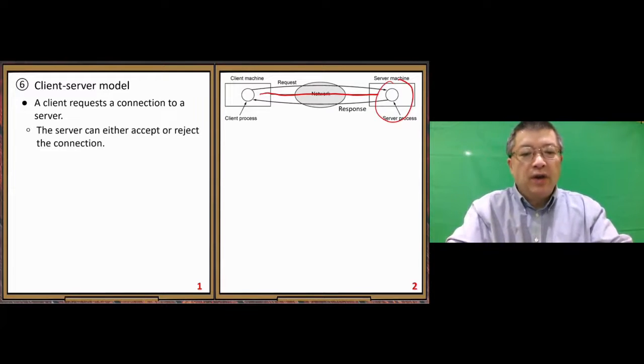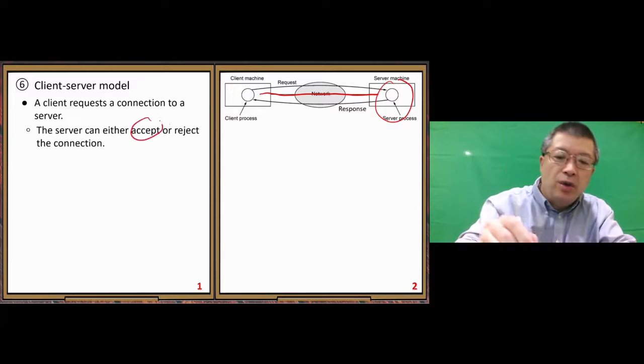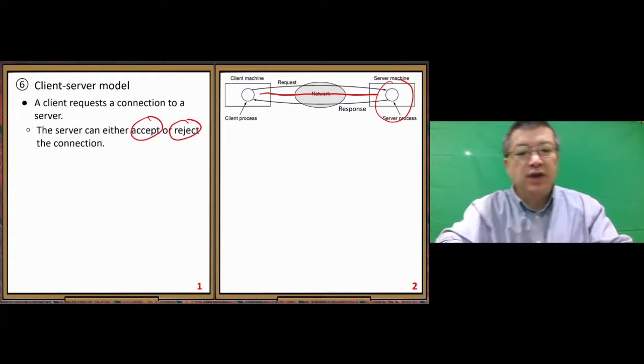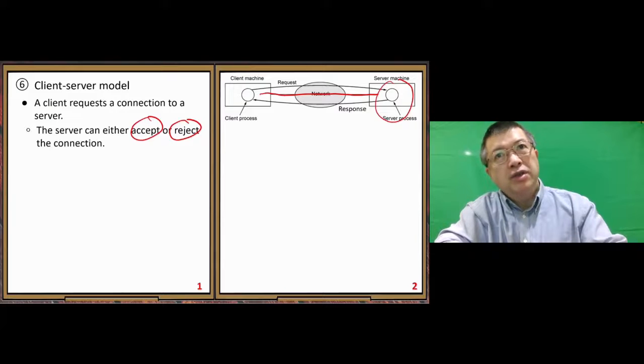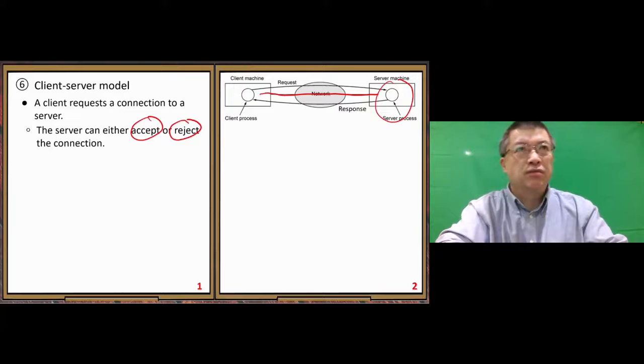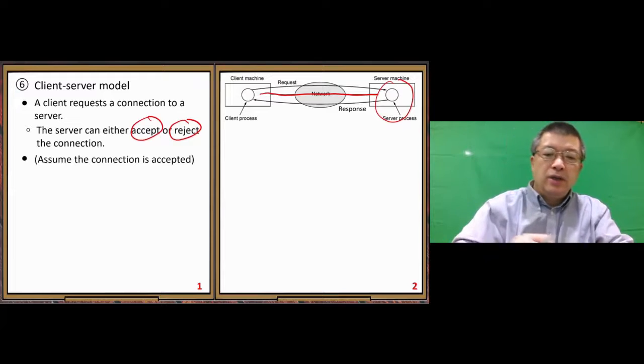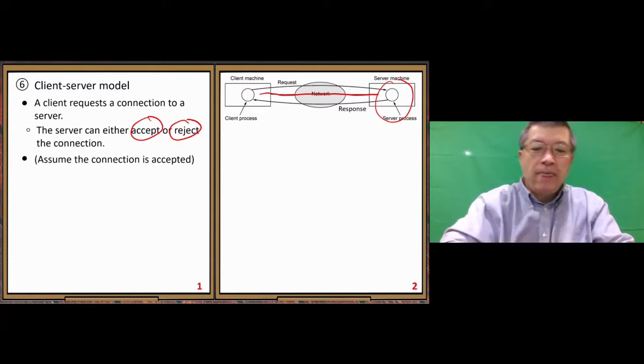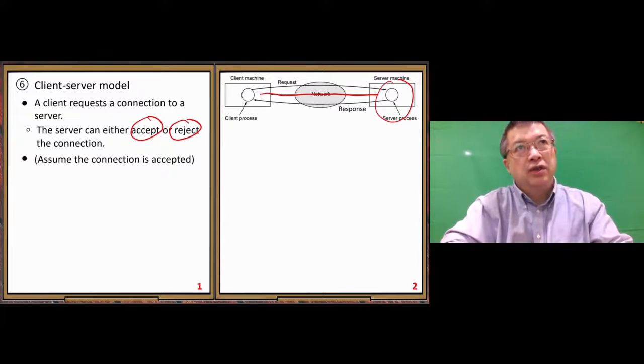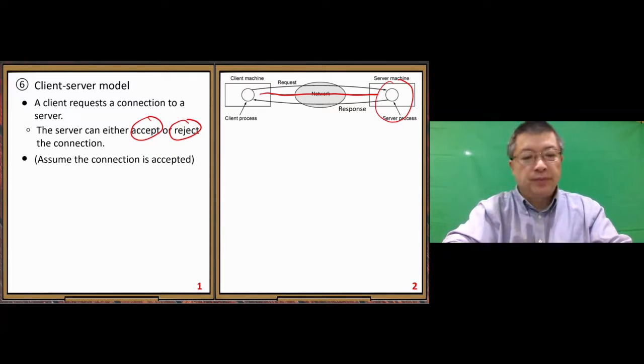The server can either accept or reject the connection. Sometimes the server needs to reject certain requests for security reasons. Now we consider the acceptance situation, so the connection is accepted.